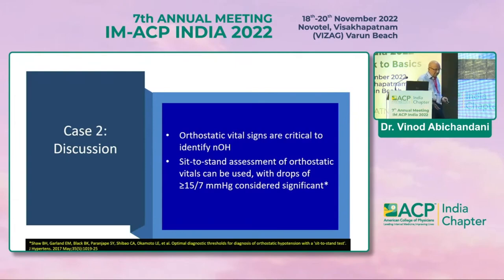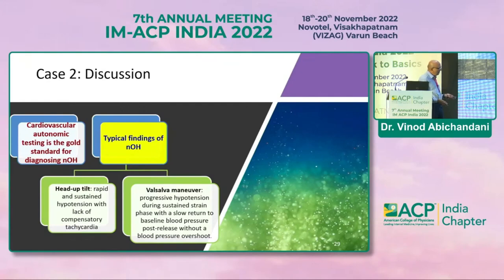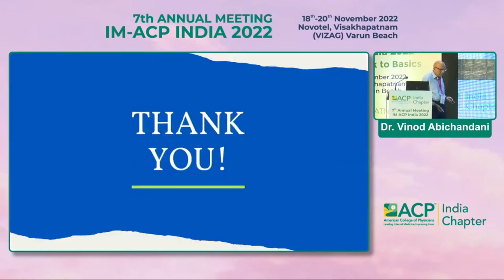Cardiovascular autonomic testing is the gold standard for diagnosing neurogenic OH. Typical findings include rapid and sustained hypotension with lack of compensatory tachycardia on head-up tilt, and progressive hypotension during sustained Valsalva strain with slow return to baseline without a blood pressure overshoot post-release. The key learning points are that neurogenic OH can cause syncope, diagnosing it requires an organized approach to history and physical examination, and measuring orthostatic vital signs is cost-effective and critical for diagnosis.